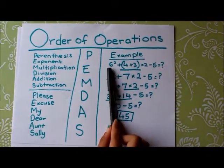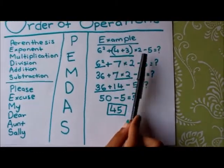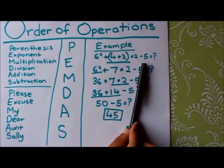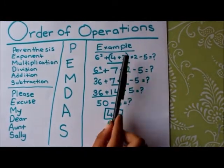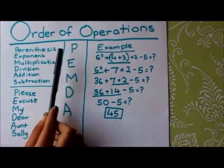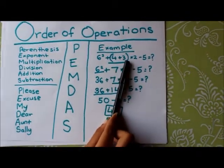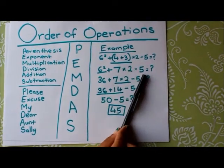For example, 6 to the power of 2 plus, in parentheses, 4 plus 3 times 2 minus 5. 4 plus 3 is in parentheses, and parentheses is the first operation that you have to use. So 4 plus 3 is 7, so I did 6 to the power of 2 plus 7 times 2 minus 5.